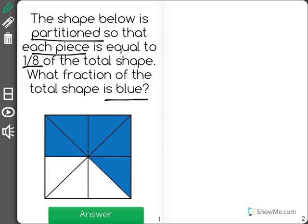So it's saying it's partitioned. That means it is split up into eight equal pieces, because each of these pieces is worth one-eighth.